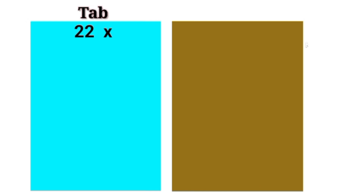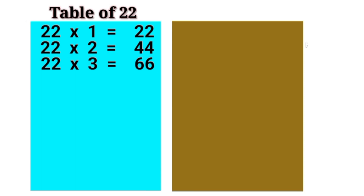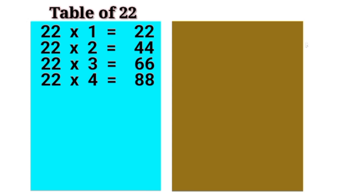22 1 is 22, 22 2 is 44, 22 3 is 66, 22 4 is 88, 22 5 is 110.